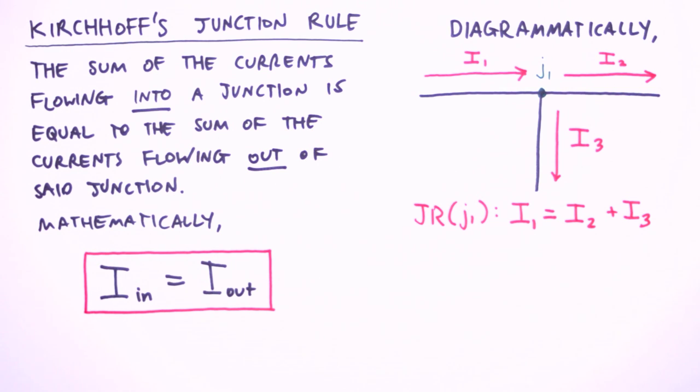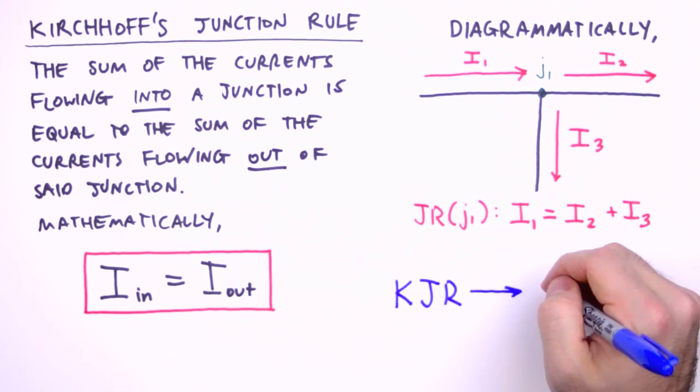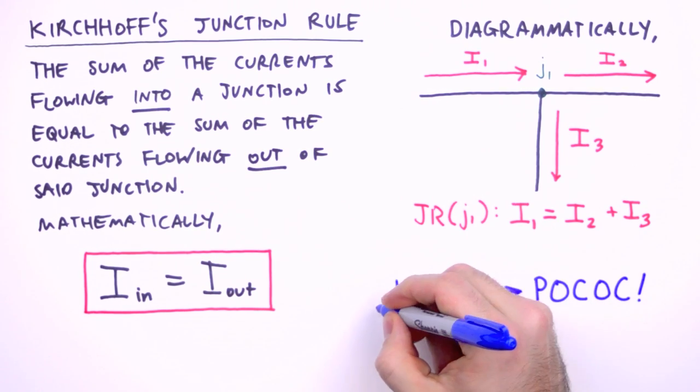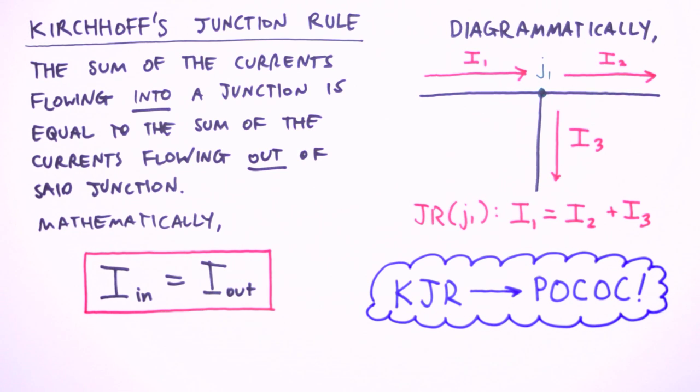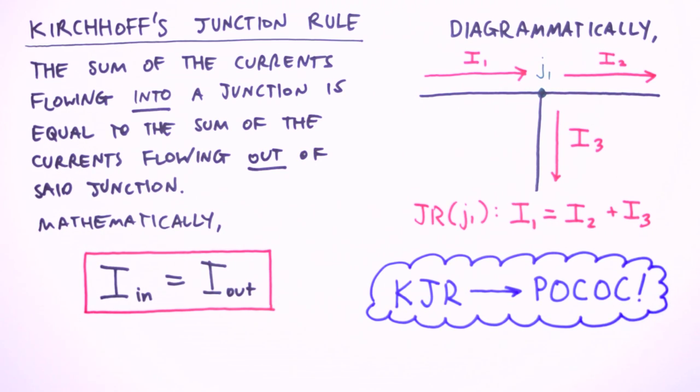Before we move on, I'm impelled to point out that Kirchhoff's junction rule is just a consequence of a more physically significant principle, namely the principle of conservation of charge. So we can sort of think of J1 as a fork in the road, where the cars—I mean the charges—either continue traveling to the right or turn and move downward. Got it? Good.